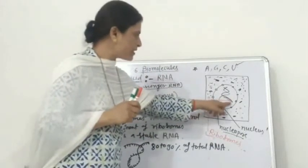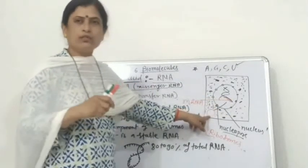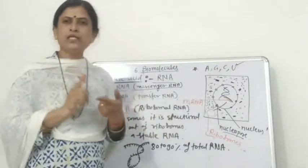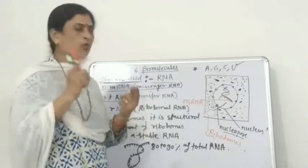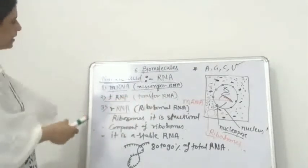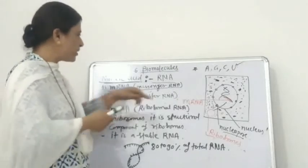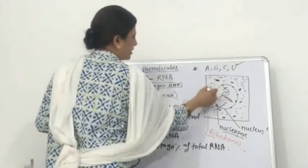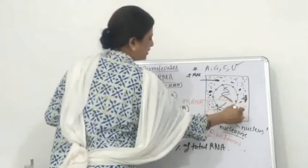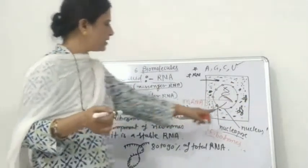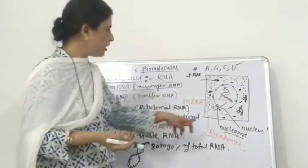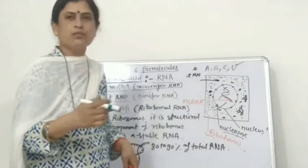mRNA carries the message from DNA to ribosomes for the process of protein synthesis. tRNA transfers the active amino acids to the ribosome or to the site of protein synthesis. tRNA molecules are present in the cytoplasm of the cell and form a cloverleaf-like structure.